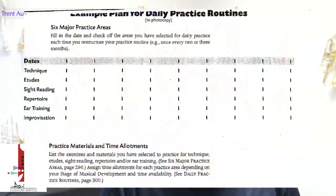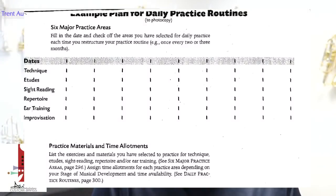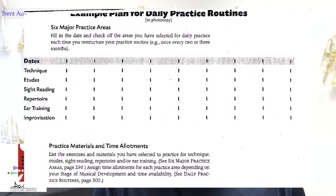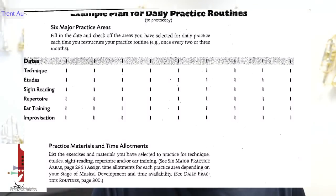To put all that stuff together, you need a detailed practice plan. Here's a sample plan with categories like technique, etude, sight reading, repertoire, ear training, and improvisation. Then you put in the time you need — say, 20 minutes of technique, 10 minutes of etudes, and 30 minutes of repertoire. Write it out and you can take even more detailed notes. We'll dig into that a little bit deeper in the next live mini lesson, which will be a few weeks from now.